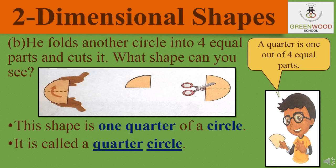What is a quarter? A quarter is one out of four equal parts, just like when you eat pizza. It's one whole circle and you just take one part, which is also known as a quarter.